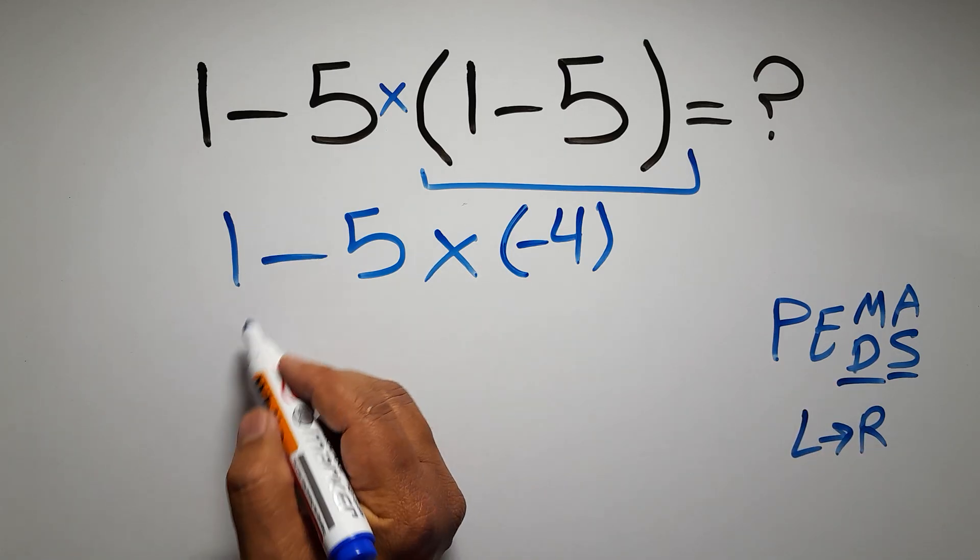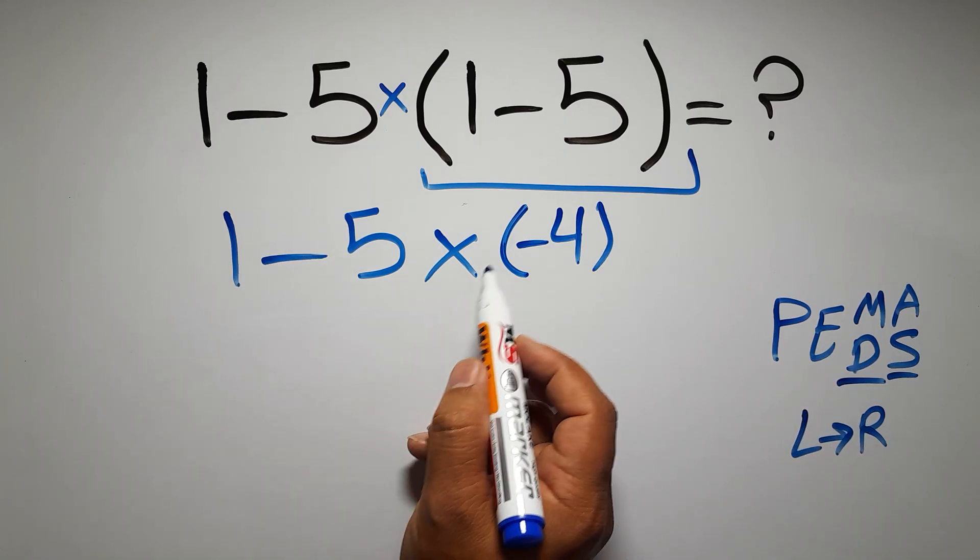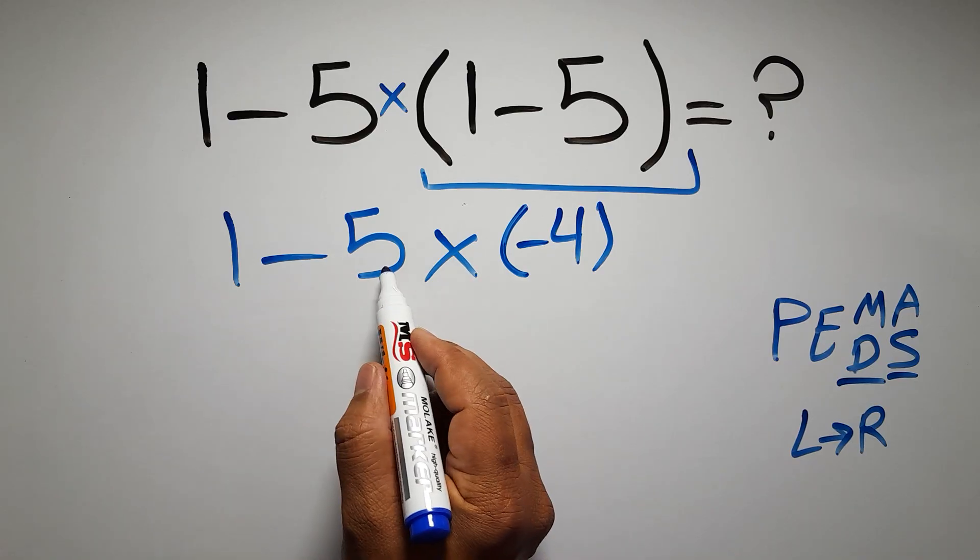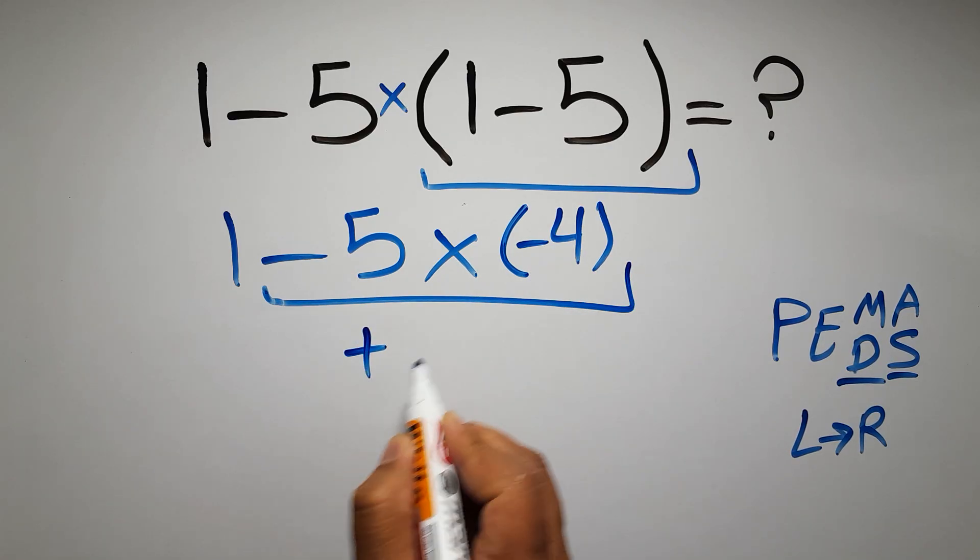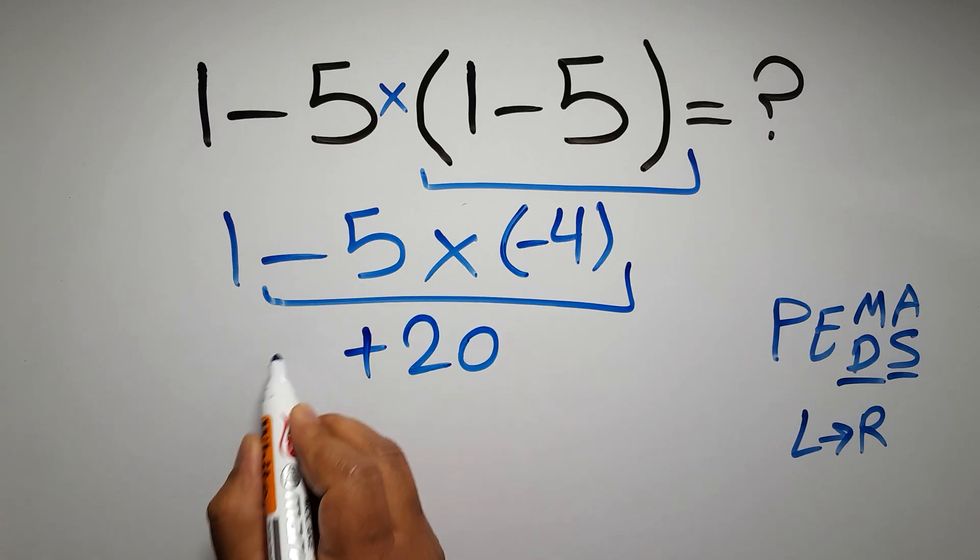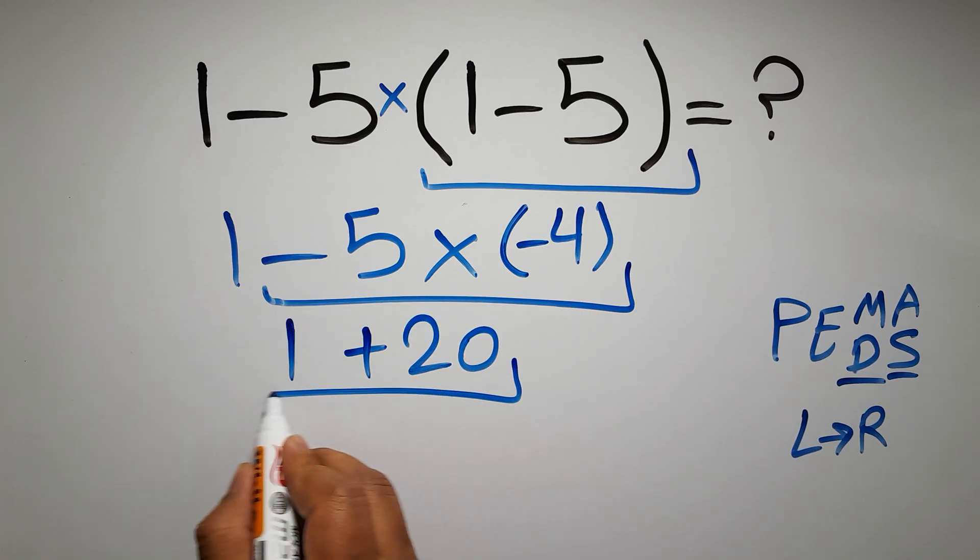So first we have to do this multiplication: negative 5 times negative 4 gives us positive 20. So we have 1 plus 20, which equals 21, and this is our final answer to this problem.